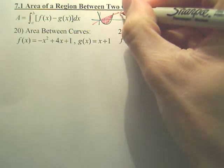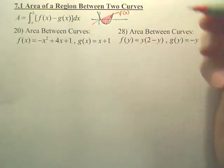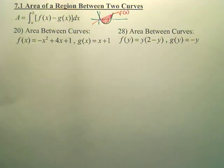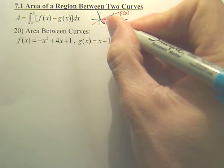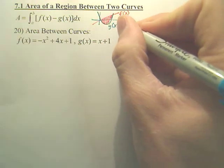This is always your f of x. The graph on top is always your f of x. The graph on bottom is always your g of x.